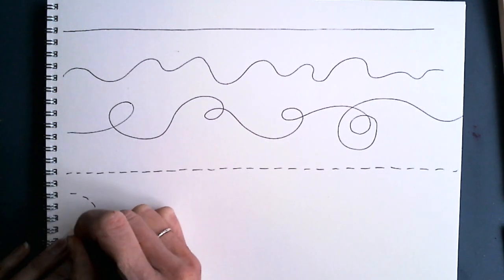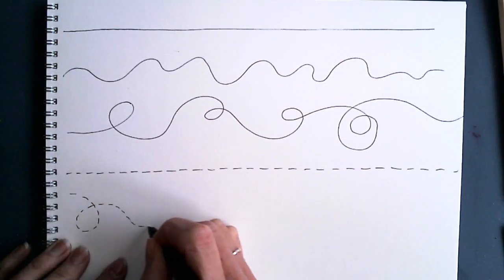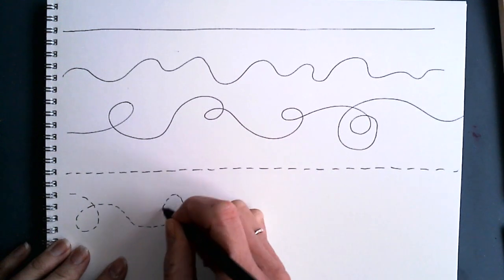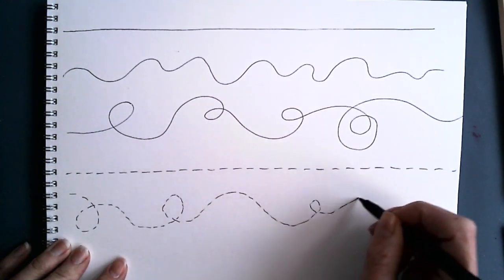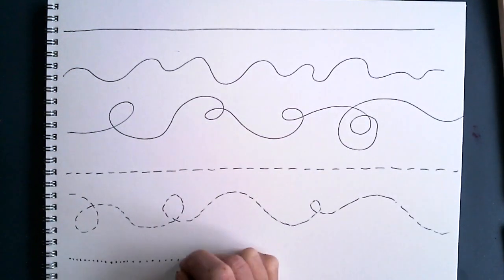A line can be dashed. You can also have a dashed curved or looped line. A line can be dotted.